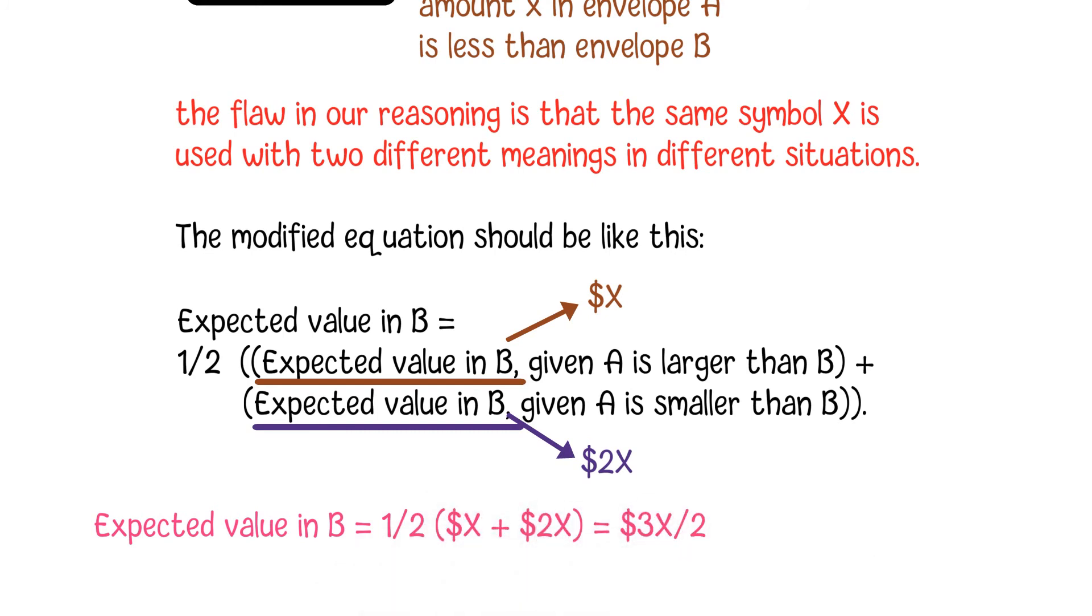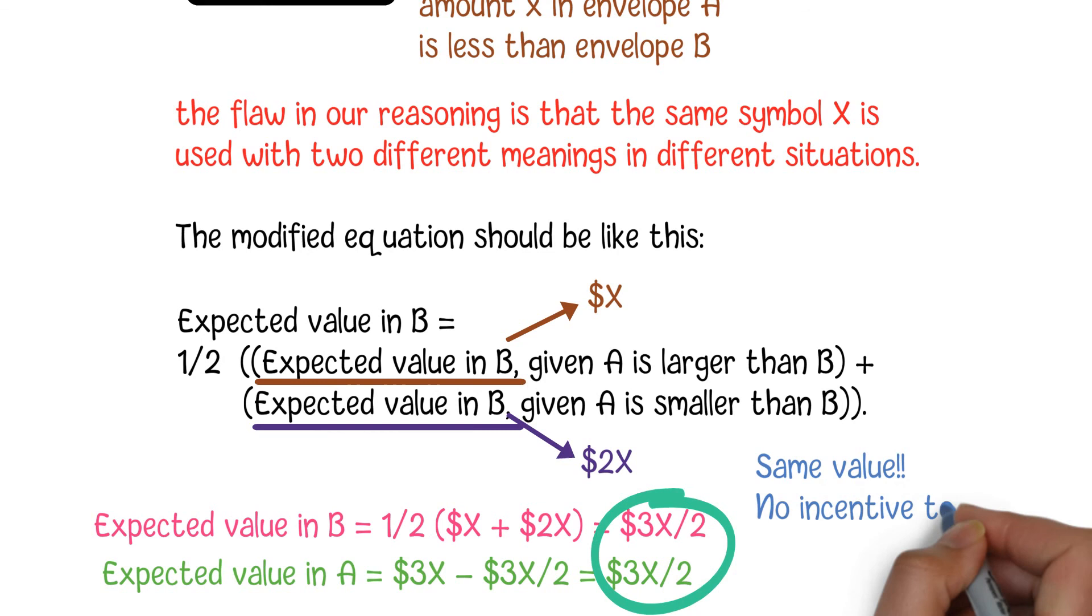Due to the fact that the sum of two envelopes is X plus 2X equals 3X, the expected value for the current envelope is also 3X/2. So there is no incentive to switch envelopes, and hence no paradox.